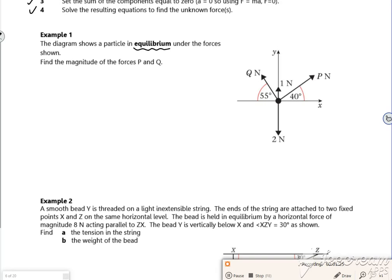Find the magnitudes of P and Q. Right, so let's look. We should do horizontal first, so horizontal I'm going to use F equals ma, but my acceleration is zero because it's in equilibrium.